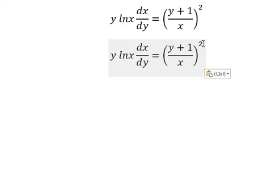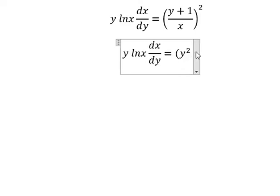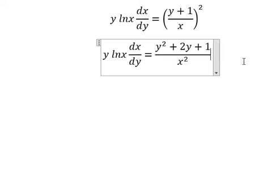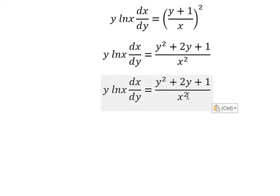So we need to expand this one. You get y squared plus 2y plus 1 over x squared. Next, x squared will go to the left, y dy will go to the right.